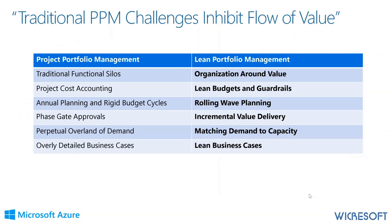When comparing to traditional PPM, traditional approaches inhibit the flow of value, and LPM provides counterpoints to overcome these challenges. Lean Budgets and Guardrails is one of them — we budget at the portfolio level at the value stream level, which includes solutions. We do rolling wave planning both from a portfolio standpoint and at the program level, doing program increments on a quarterly basis. We negotiate capacity to deliver value through our epics, and we have a lean business case that allows us to put the investment consideration of an epic together more quickly.